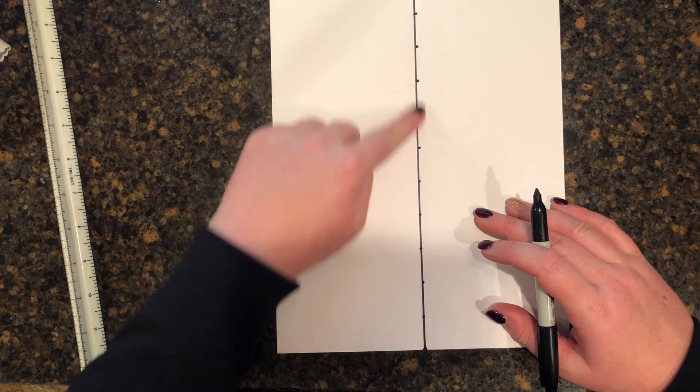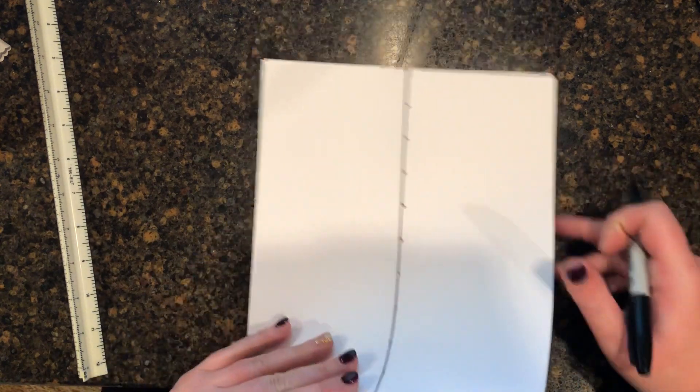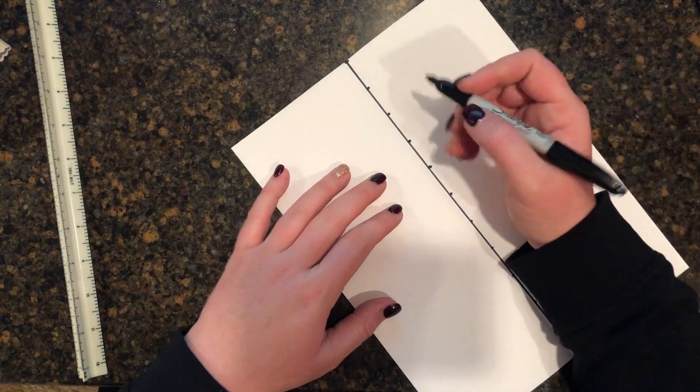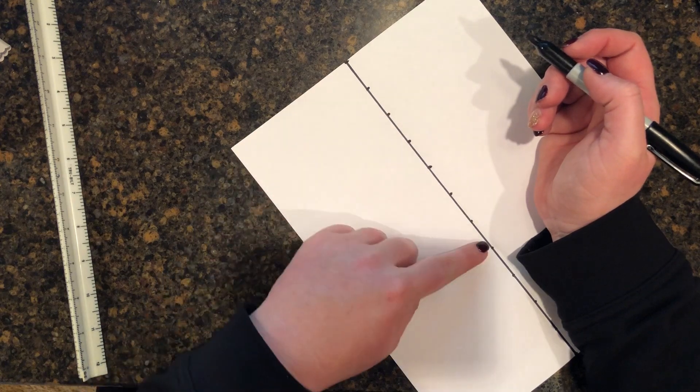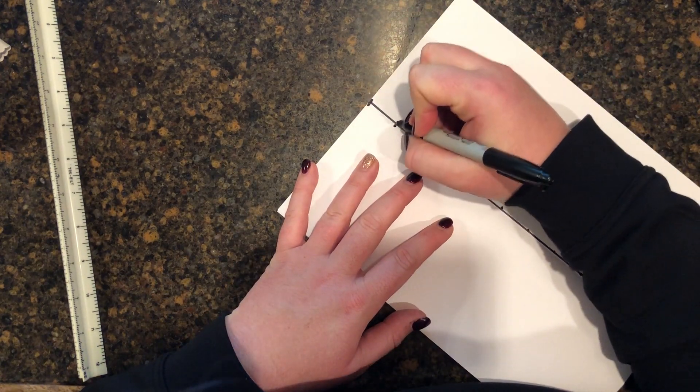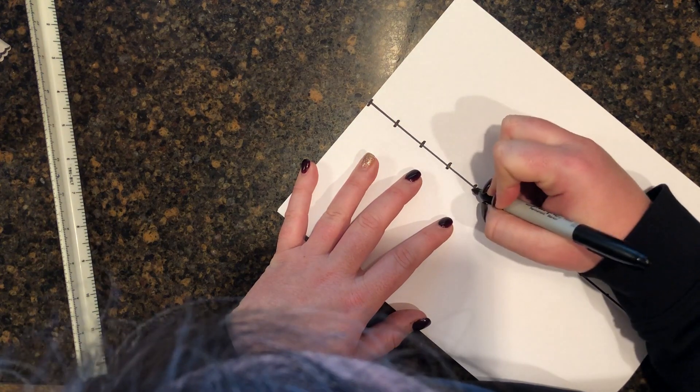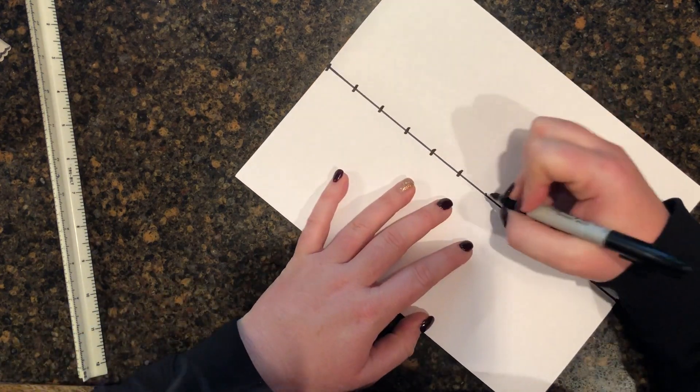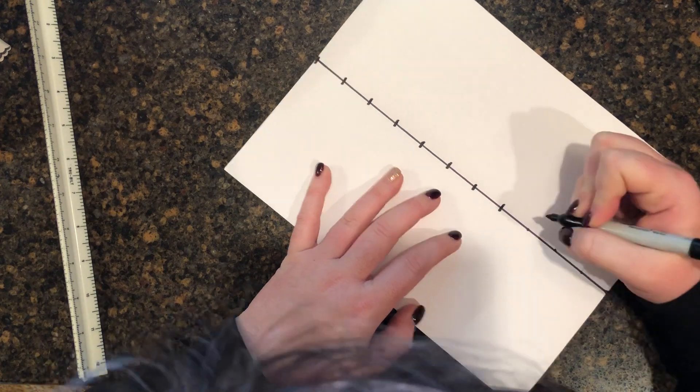So now that I have my intervals marked, I'm gonna come back in here and I'm just gonna draw a short little line at every mark. I'm just gonna freehand this, but if you wanted to use your ruler so you were sure that your little lines were perfectly straight, you could absolutely do that. That is totally up to you.